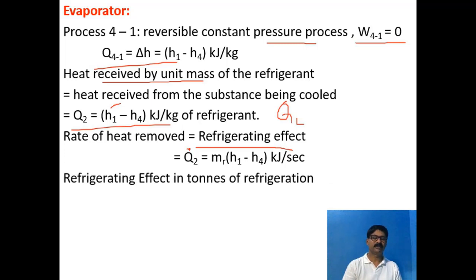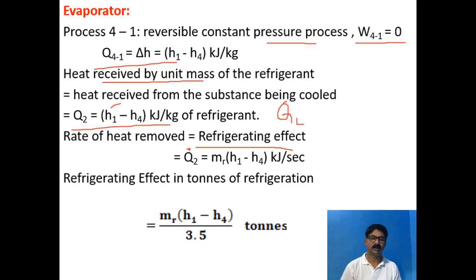If you want to calculate the refrigerating effect in tons of refrigeration, divide Q̇ᴸ = ṁᴿ × (H₁ − H₄) by 3.5, because 1 ton of refrigeration equals 3.5 kJ/s. Dividing by 3.5 gives the refrigerating effect in tons of refrigeration.